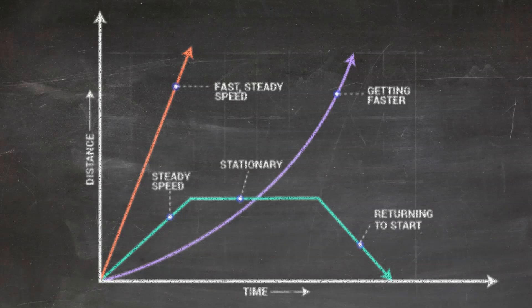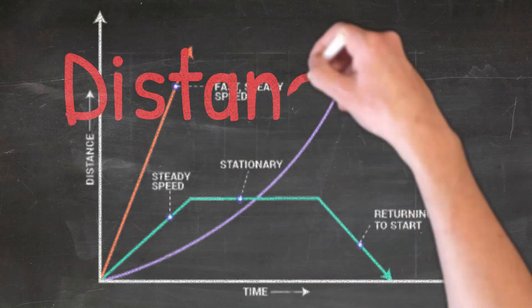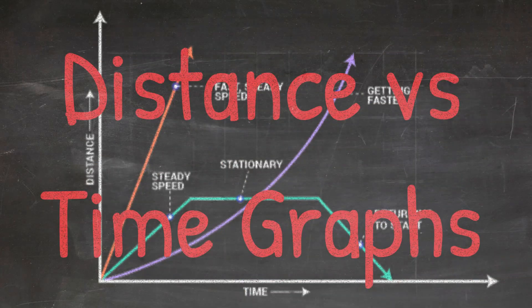Graphing motion can be tricky at first, but once you understand it, it is very easy and you're able to determine a lot of information about the motion of an object. In this video, we are going to cover all the information you can learn from a distance versus time graph and how to use the graph to describe an object's motion.